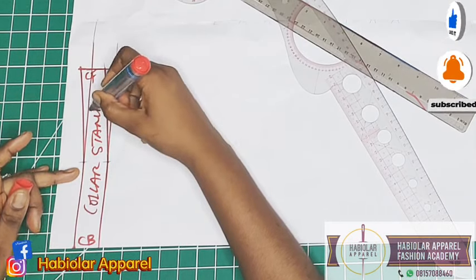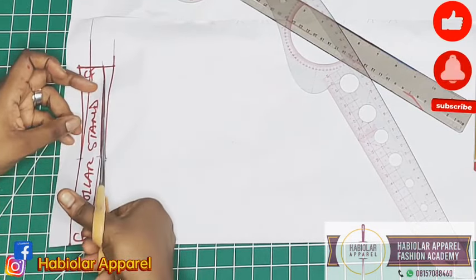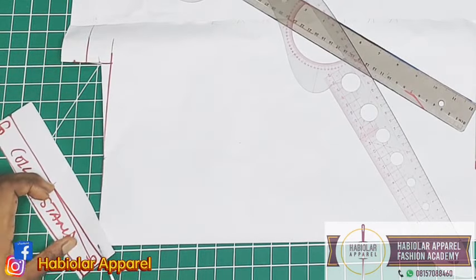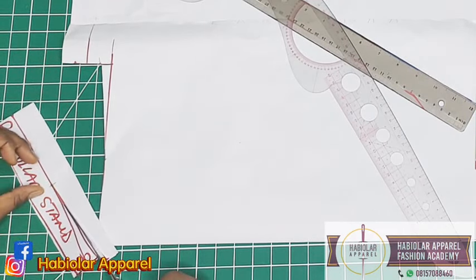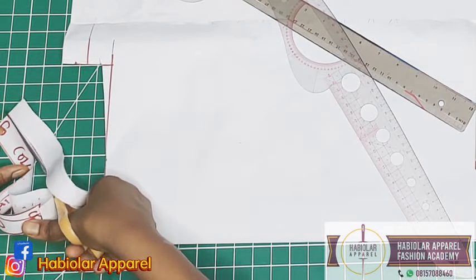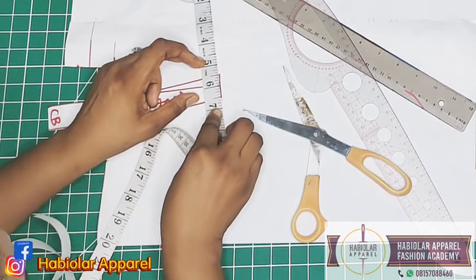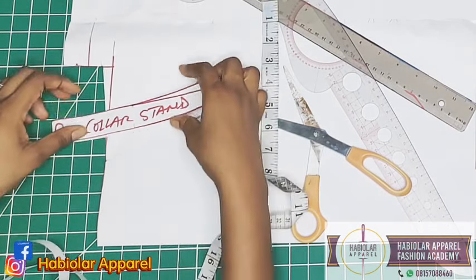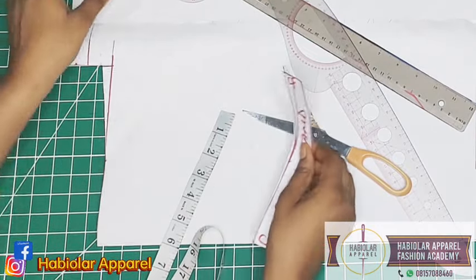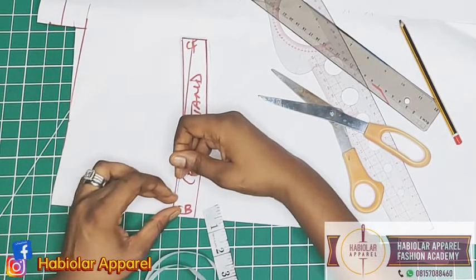So the center back will be on fold. This is the collar stand. I'll just cut out now. Then we go ahead and draft the main collar. I'll just go ahead and check if I still measure fine. I still have my one inch there.